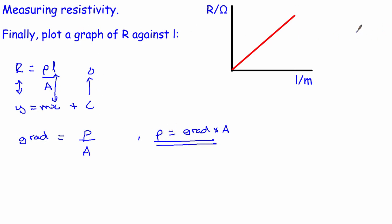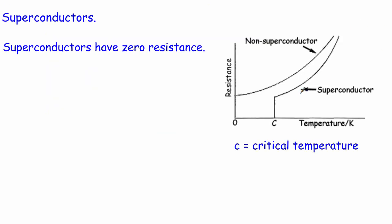That's resistivity. The final thing to look at is superconductivity, which for A-level is actually very straightforward. Resistivity tells us how much a material resists a current; conductivity tells us how much it will conduct. Superconductors have a really special property: they have zero resistance. If they have no resistance, none of the energy transferred by the current is transferred into heat, which makes them very useful.